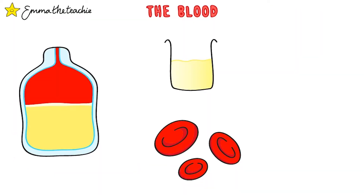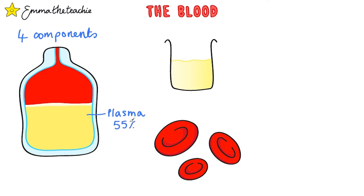The blood is part of the human circulatory system, along with the blood vessels and the heart. You'll learn more about these in separate videos. There are four components of the blood. You need to know what each part does and what it looks like. It may surprise you that over half of your blood isn't actually made of cells.